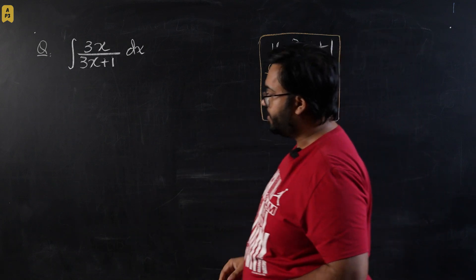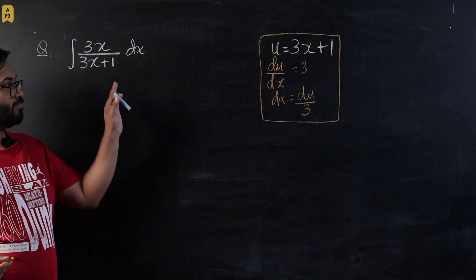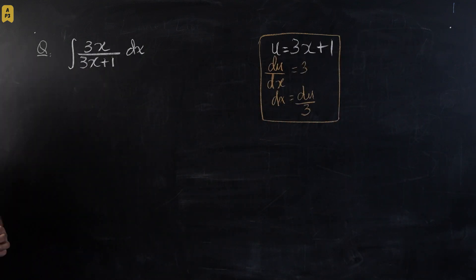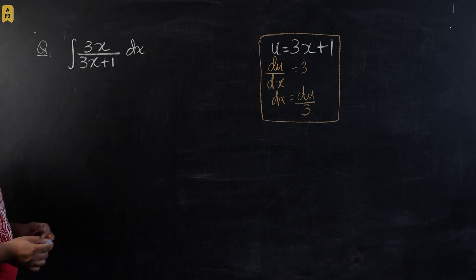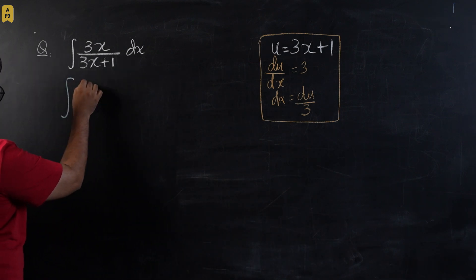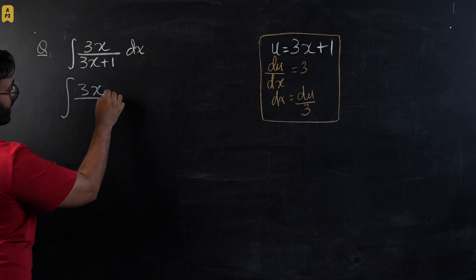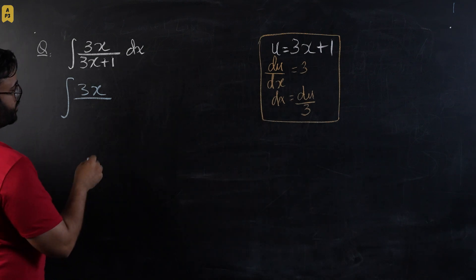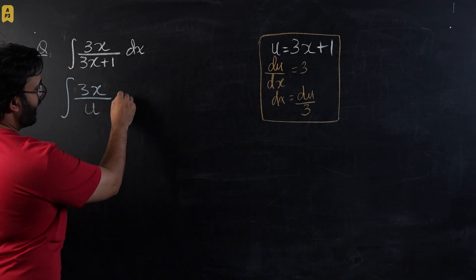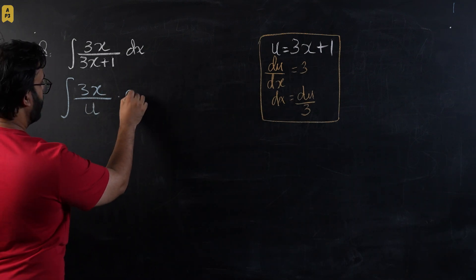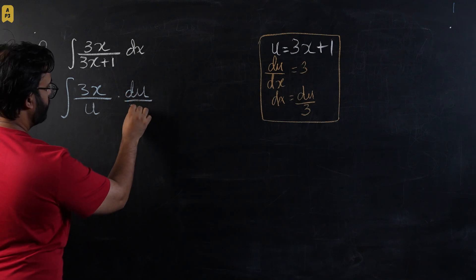Now let's come to the main integral and let's start putting in the values for substitution. So this 3x would stay as it is, this 3x plus 1 can be substituted as u, and dx would be substituted as du upon 3.